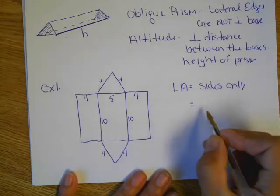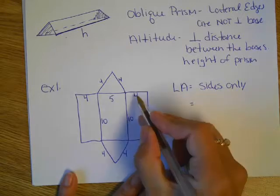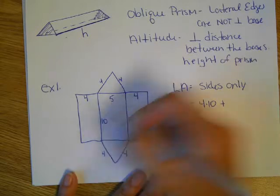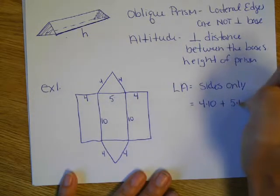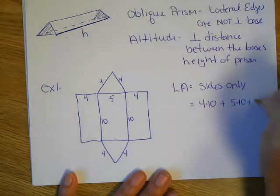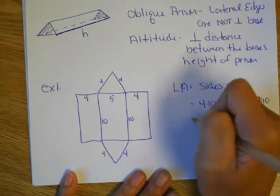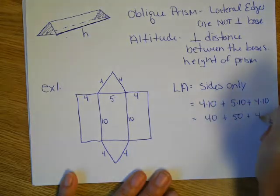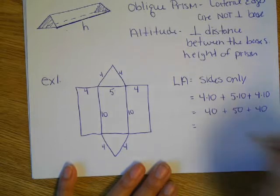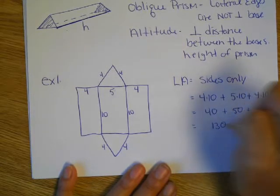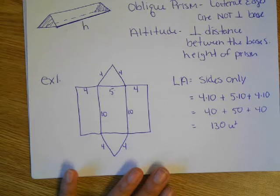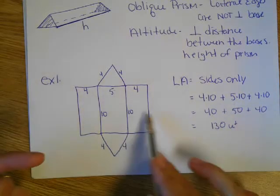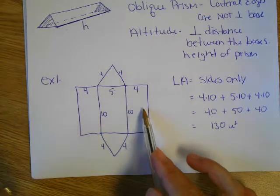So we're going to do lateral area and surface area by just looking at the areas of the pieces, and then we're going to come up with those shortcuts. So the lateral area is only the area of the rectangular sides, no bases. So these sides only. And since they're all rectangles, it's just base times height. So we've got a four times 10, plus a five times 10, plus a four times 10. So that's 40, plus 50, plus 40, for a total of 130 square units. That's not bad. So if you ever forget these formulas, you just know that lateral area is just the area of all the sides. The sides are rectangles, base times height.